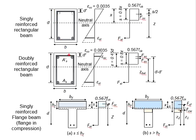This can easily be checked by referring to the ratio d' per d. The ratio needs to be less than 0.171, so that the compressive steel bar has yielded.